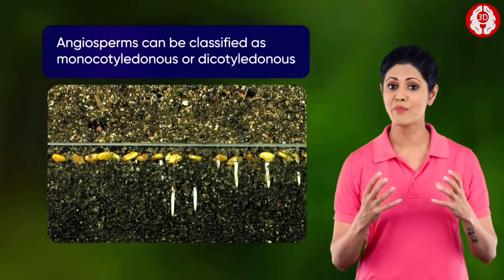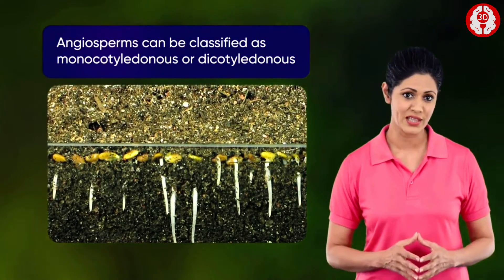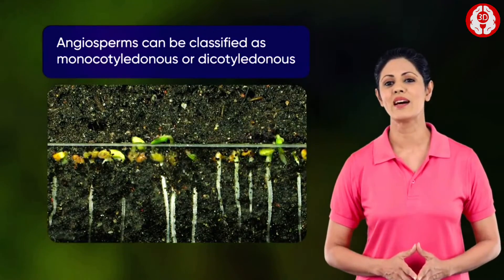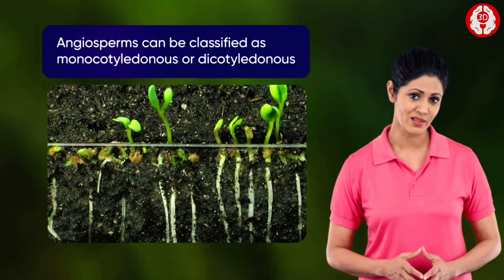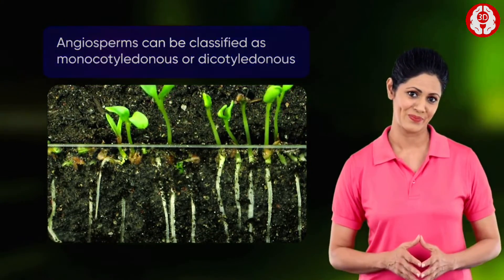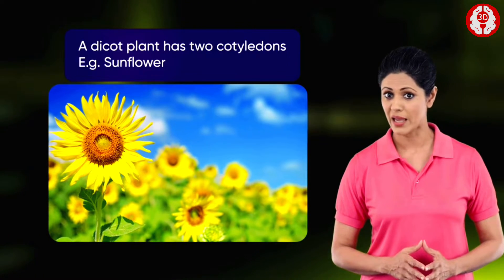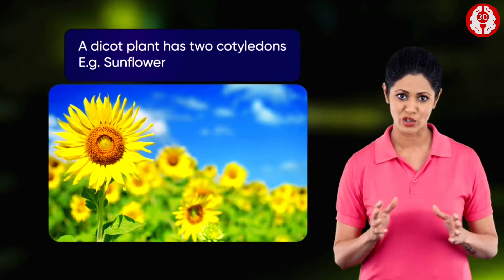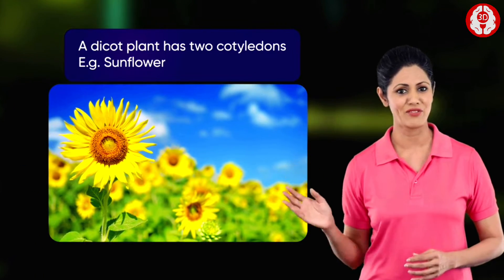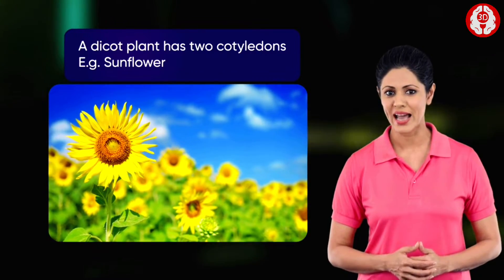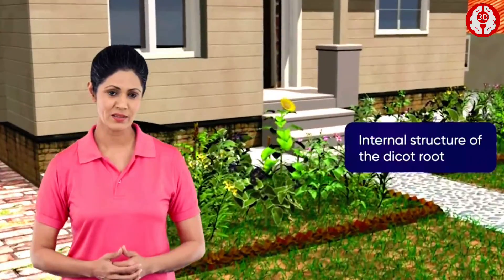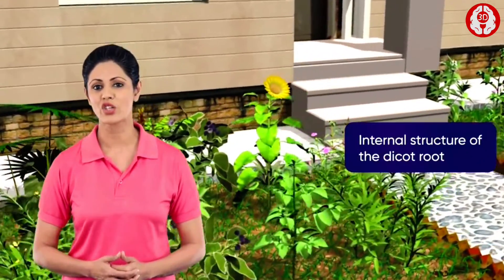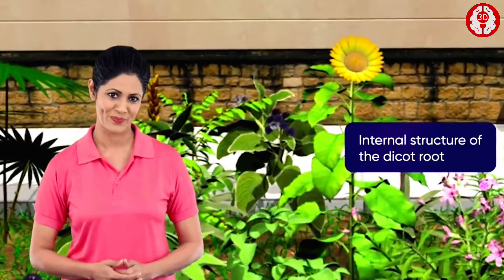Depending on the nature of the embryo of the seed of a plant, it can be classified as monocotyledonous or dicotyledonous. Two cotyledons imply a dicot plant such as the sunflower. This topic explains the internal structure of a dicot root.